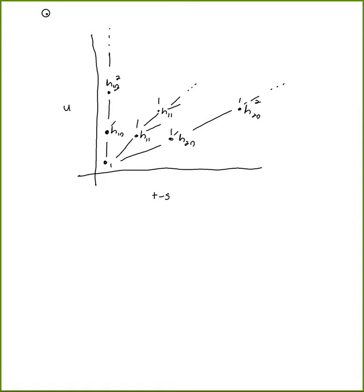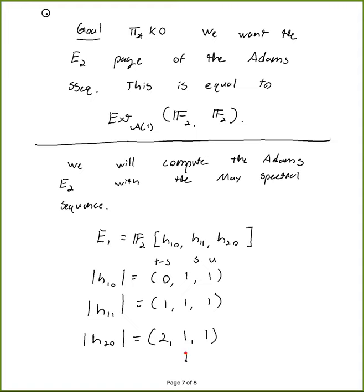There's only one differential and it cuts down the garbage immediately. The D1 differential: d1(H_{20}) = H_{10} · H_{11}. This is the first differential in the May spectral sequence. Note that s is constant for all of these elements — s doesn't change — which is why we can plot it this way.